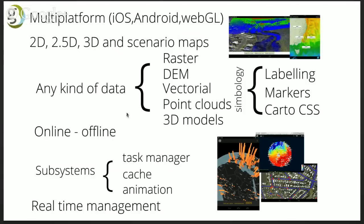In the current version, we have reached the goal of being multi-platform across the three platforms we support: iOS, Android, and WebGL. We have 2D, 2.5D, and 3D visualization of maps. We can show any kind of data — GIS data or other types — including raster information, terrain elevation models, vectorial data, points on the globe, 3D models, 3D shapes, and more.